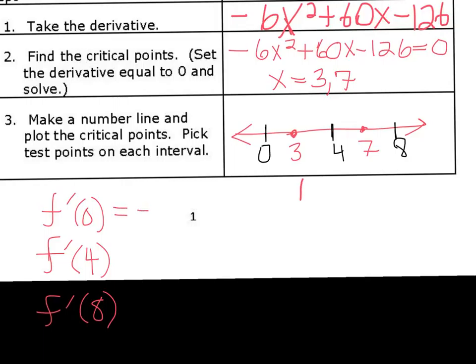So I get that we get a negative 126 for f prime of 0, and f prime of 4 is 18, and f prime of 8 is negative 30. Since it's a negative number that we get for that one, that tells me that the function's decreasing on that interval. So from negative infinity to 3, we're decreasing. Since the f prime of 4 is positive, we know we're increasing on that interval. So from 3 to 7, we're increasing. And f prime of 8 is negative 30. Again, we're going to be decreasing. So from 7 to positive infinity, we're decreasing.